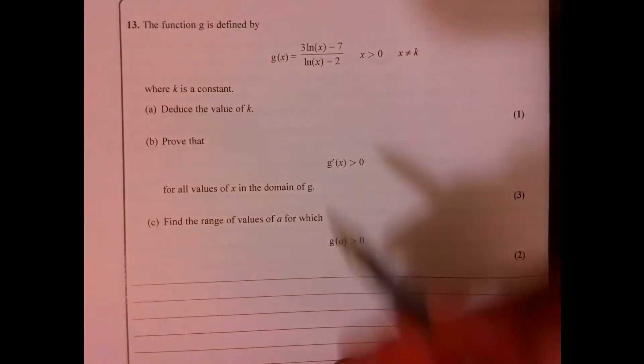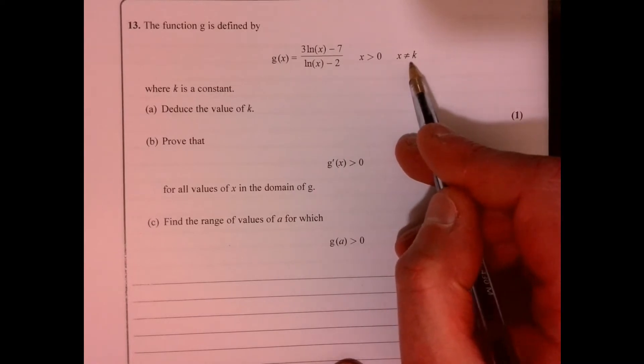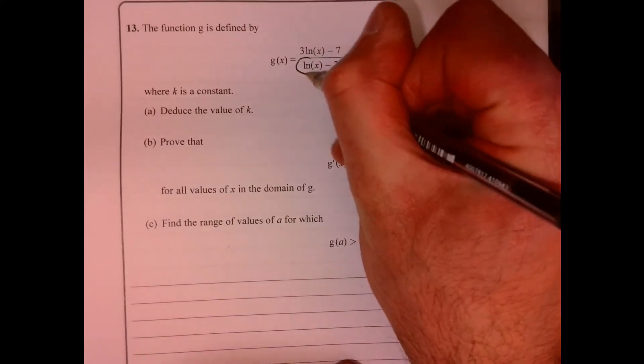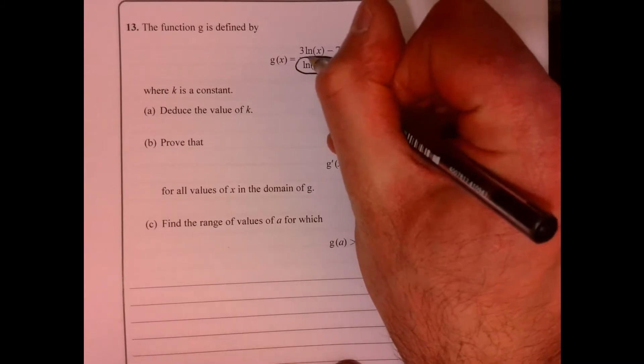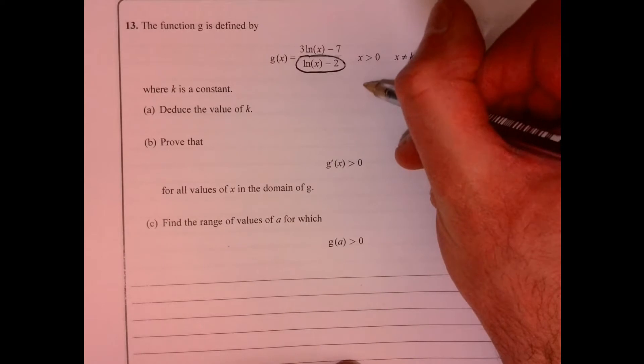Question 13. So I need to work out a value of k. In other words, x cannot equal k. Well, what that's talking about is the denominator. We don't want that equaling 0. So let's find out when it's equal to 0.